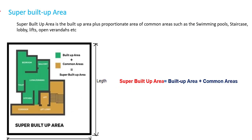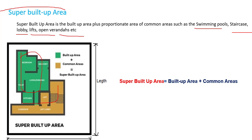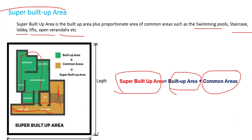The next term is super built-up area. Super built-up area is the built-up area plus a proportionate area of common areas such as swimming pools, staircase, lobby, lifts, and open verandas. So super built-up area equals built-up area plus common areas like stairs and lobby.